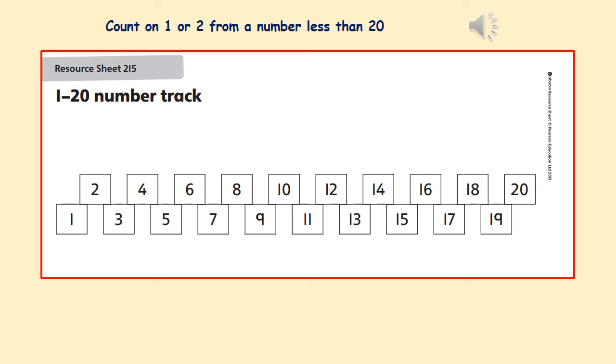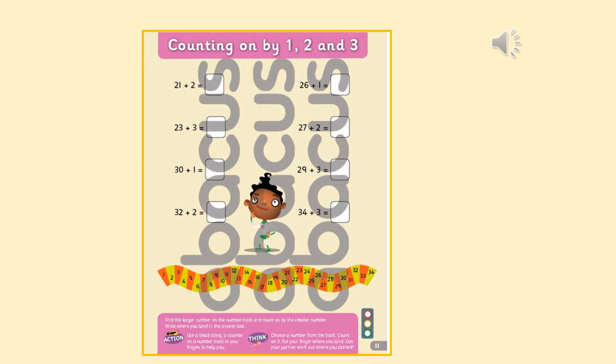For this activity, choose a number and count on 1 or 2 from a number. Complete the number sentences by counting on by 1, 2 and 3. There's some extra work at the bottom if you get through that quickly.